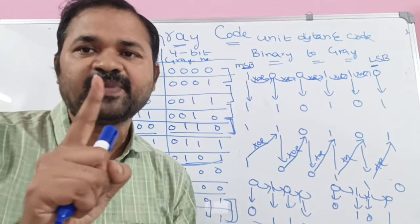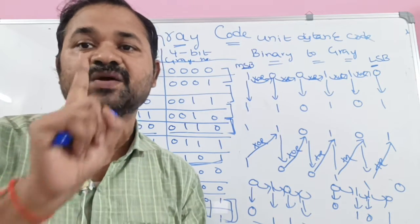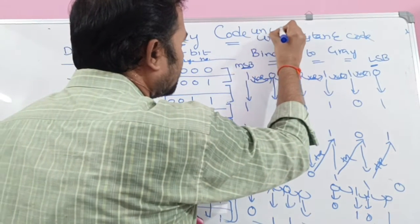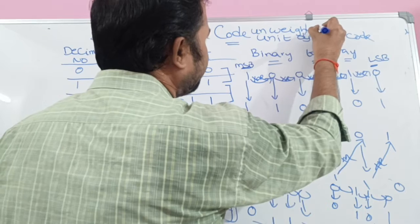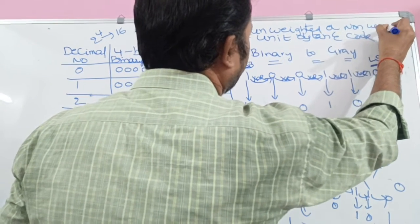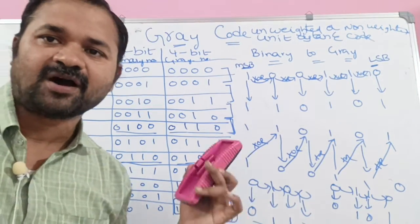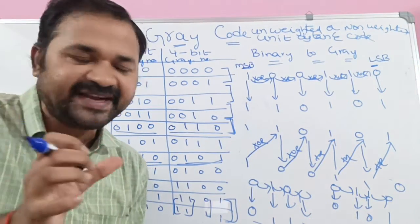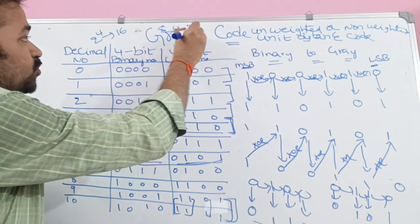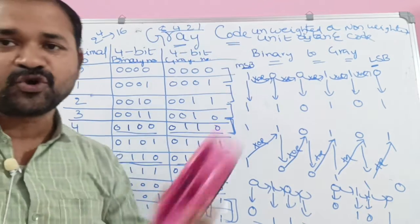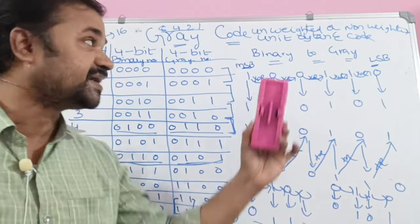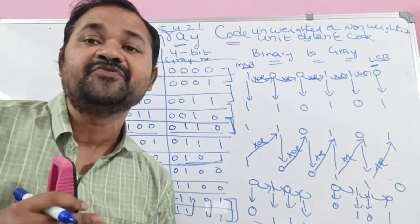Gray code can also be called an unweighted or non-weighted code. If we take a binary number or BCD number, we have weights — the 8-4-2-1 notation. Binary code or BCD code follows 8-4-2-1 notation. Whereas in gray code, we don't have any weights. That is why gray code is also called a non-weighted code.